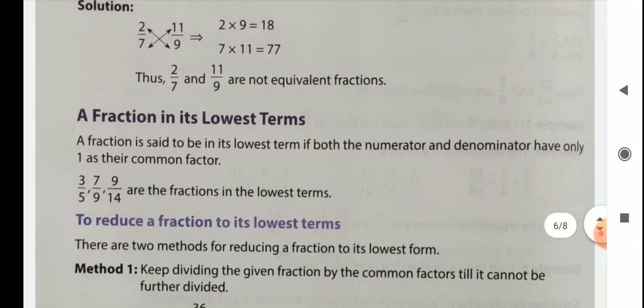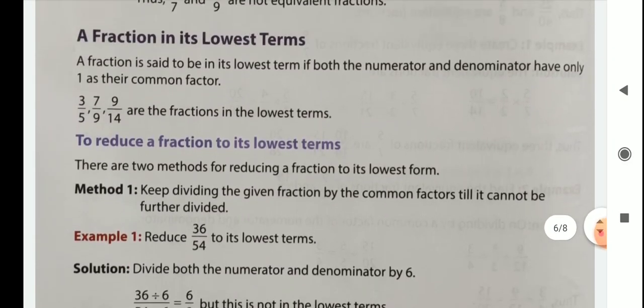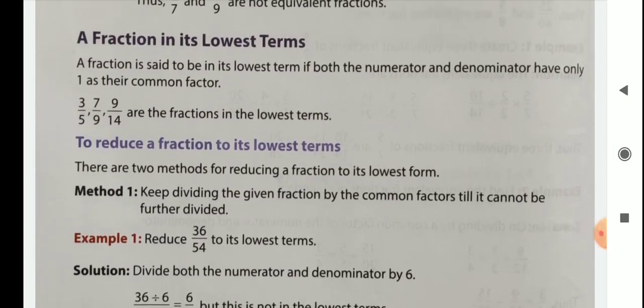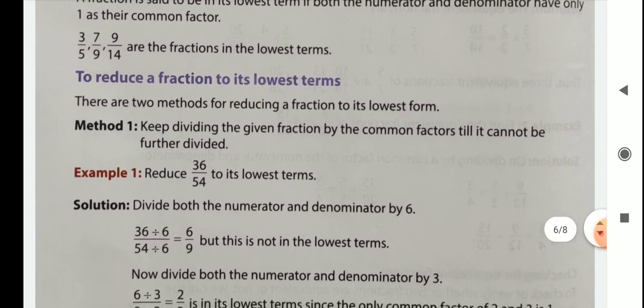A fraction is said to be in its lowest terms if both the numerator and denominator have only one as a common factor. To reduce a fraction to its lowest terms, there are two methods. Method 1: keep dividing the given fraction by a common factor until it cannot be further divided.